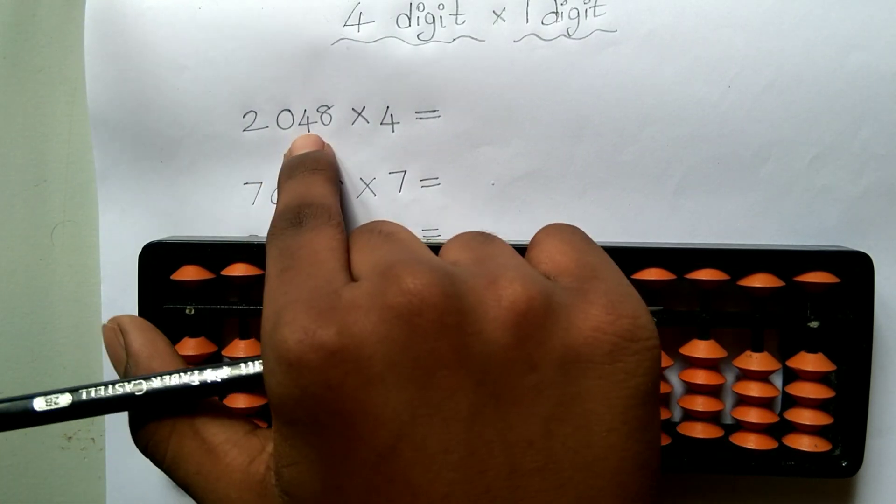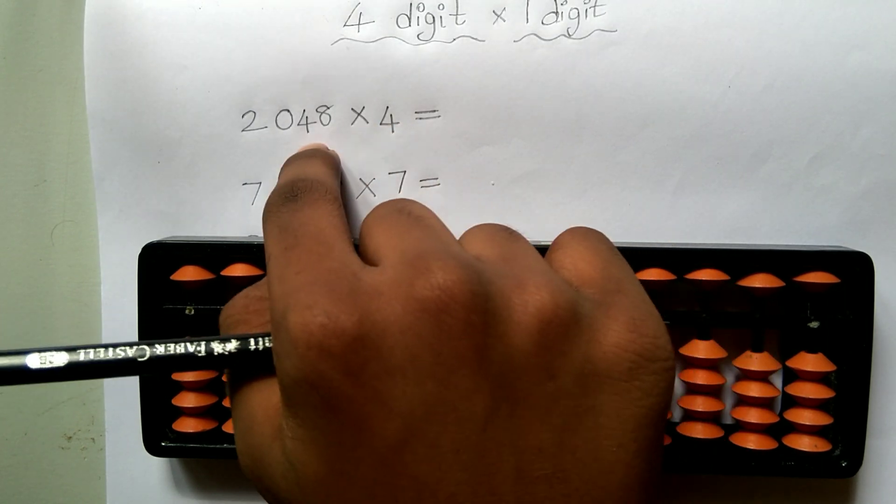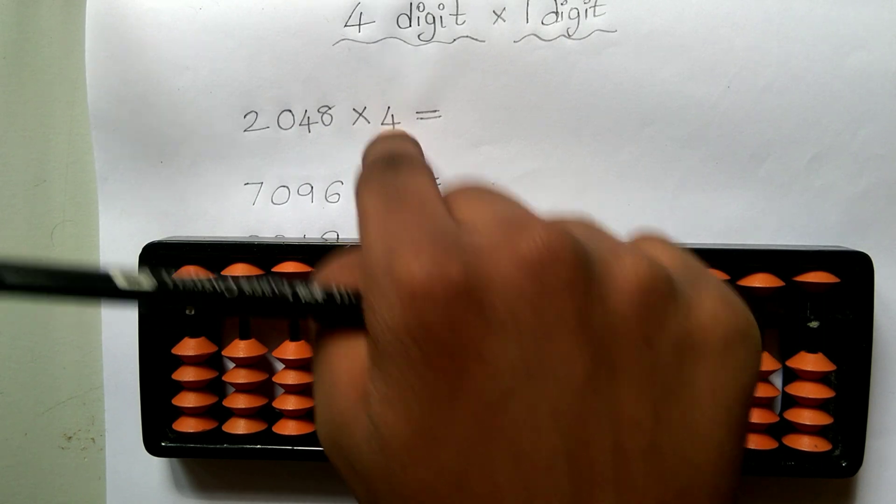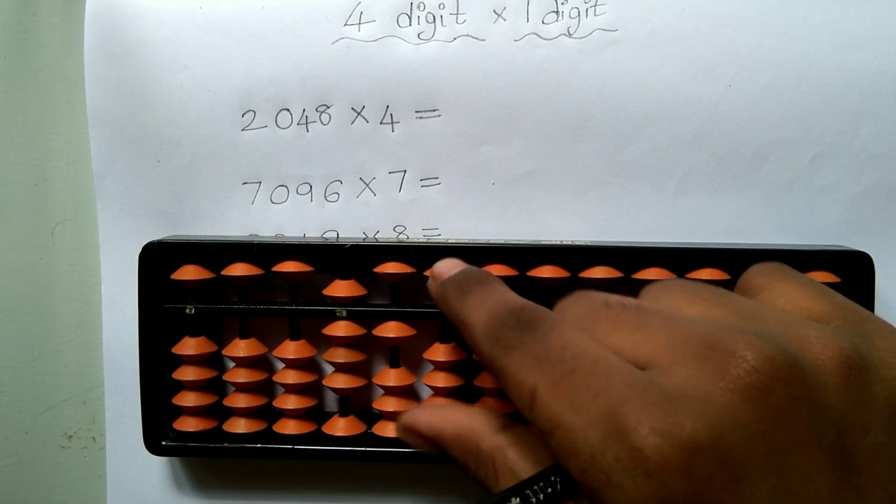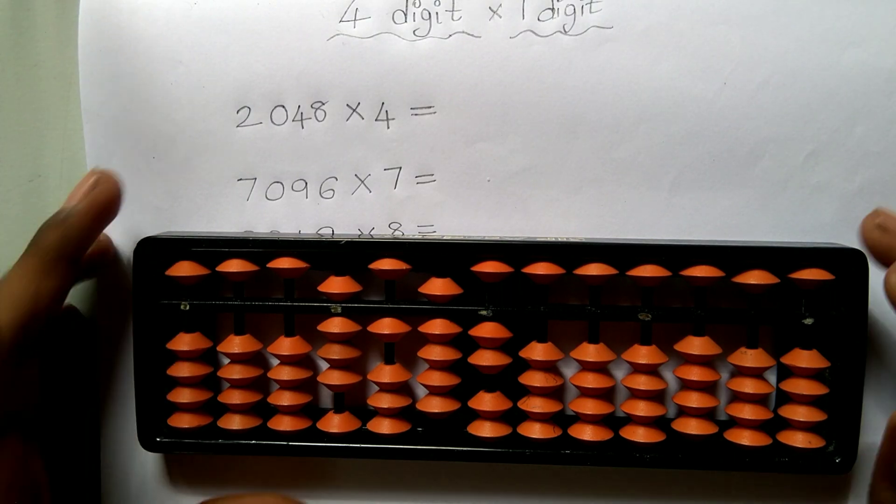So 48 × 4 is next. The last 2 digits with the second number. 48 × 4 is 4 fours are 16, 8 fours are 32. So 192. So our final answer is 8192.